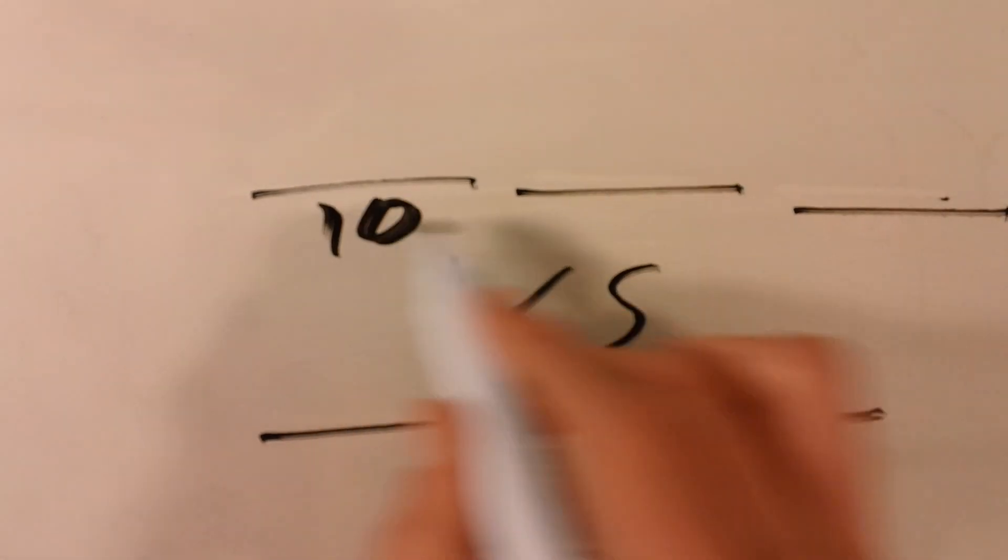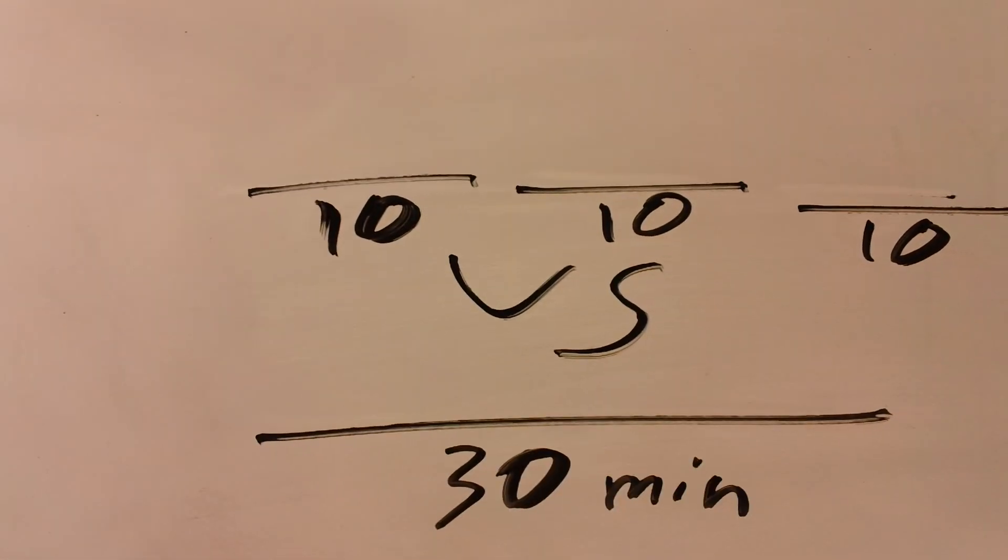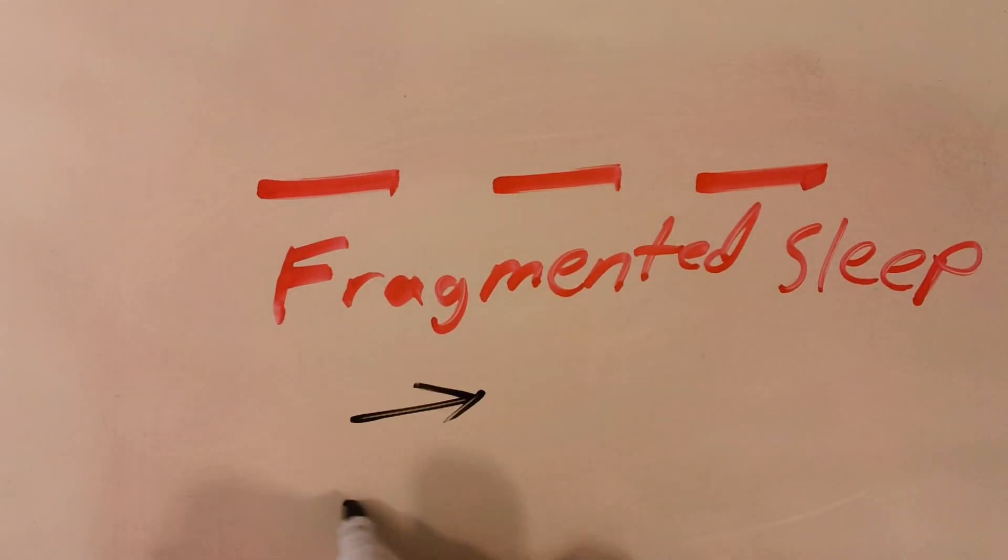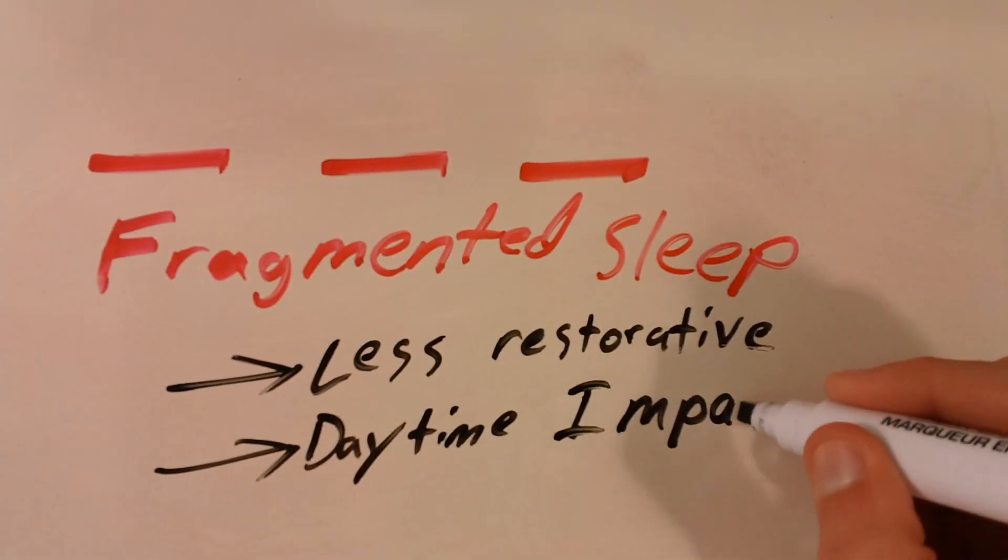But don't let that bug you. Instead of hitting snooze three different times, just have that 30 minutes of uninterrupted sleep. These gaps are called fragmented sleep which is less restorative and leads to daytime impairment.